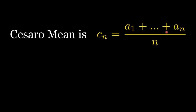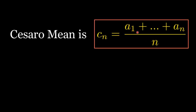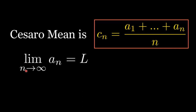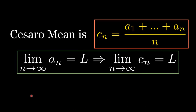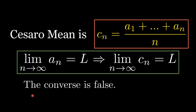Let's summarize. The Cesàro mean is C sub n equals the sum of A sub k from 1 to n, all over n. If the limit of A sub n equals L, then the limit of C sub n equals L. The converse is false, and the famous counterexample is A sub n equals minus 1 to the power of n. Thank you for watching and see you in the next video.